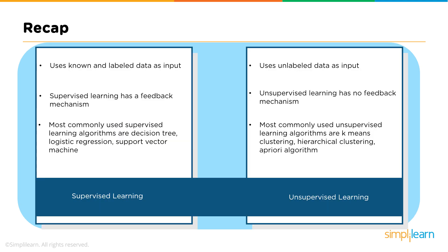I hope you have understood supervised and unsupervised learning. For a quick recap: the most fundamental difference is that supervised learning uses known, labeled data while unsupervised learning uses unlabeled data as input. Supervised learning follows a feedback mechanism while unsupervised learning does not. The most commonly used algorithms in supervised learning are decision tree, logistic regression, and support vector machine. In unsupervised learning, there are k-means clustering, hierarchical clustering, the Apriori algorithm, and many more.